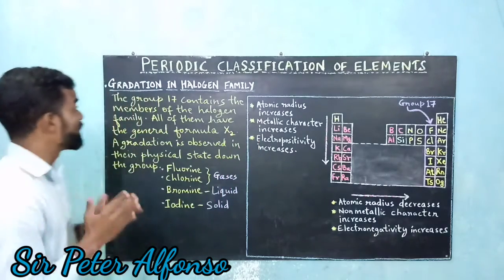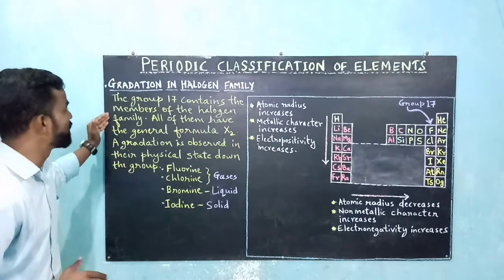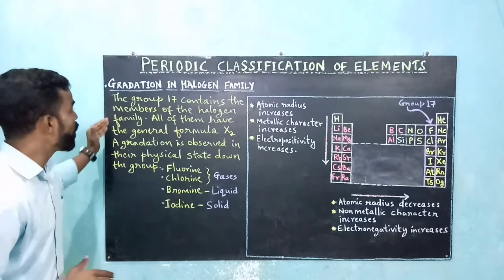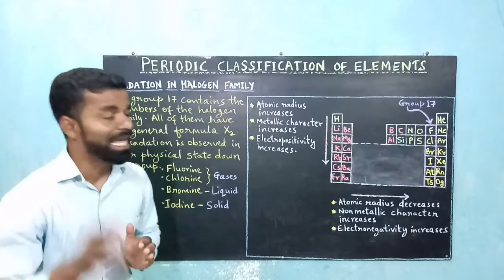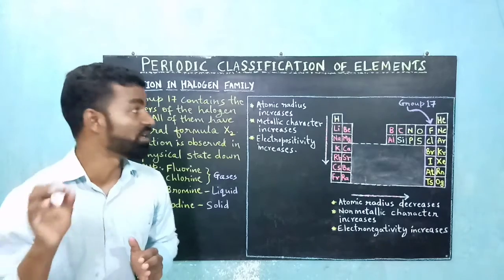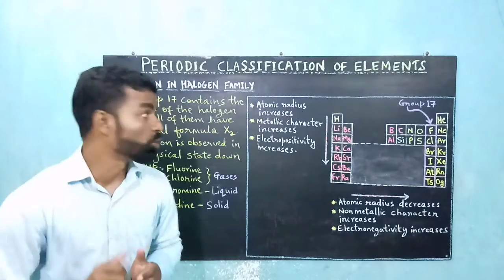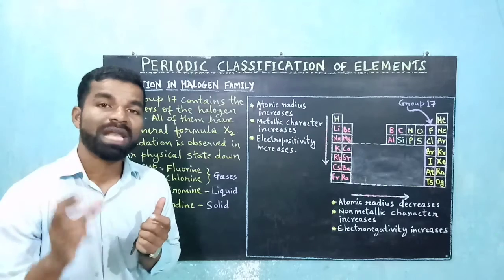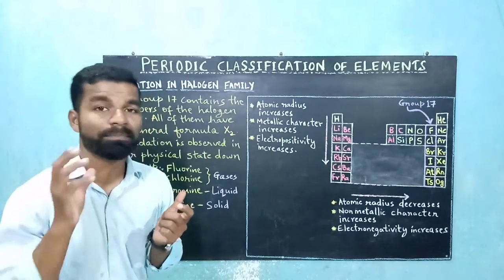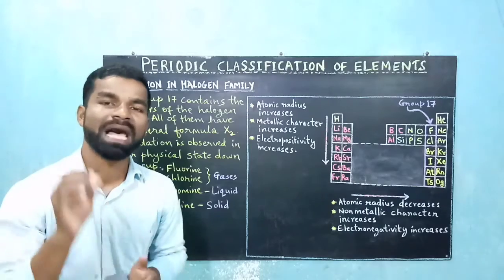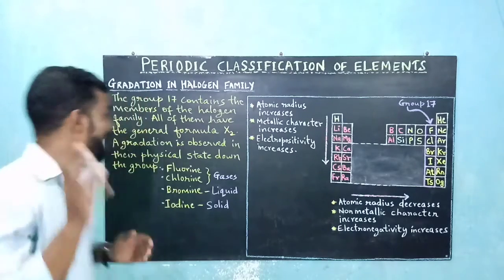To start with gradation in halogen family, group 17 contains the members of the halogen family. All of them have the general formula X2. Fluorine has the formula F2, chlorine is Cl2, bromine is Br2, and iodine has the formula I2.